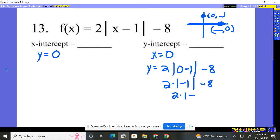So that's 2 times 1 minus 8. 2 times 1 is 2. And then 2 minus 8. Don't know where the 8 went. 2 minus 8. Negative 6. So this is crossing at zero, negative 6. I know that's where that absolute value is crossing.